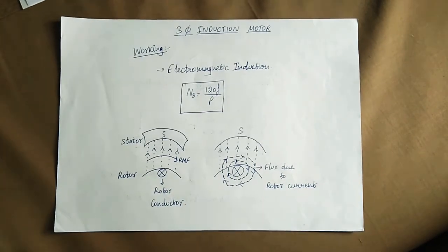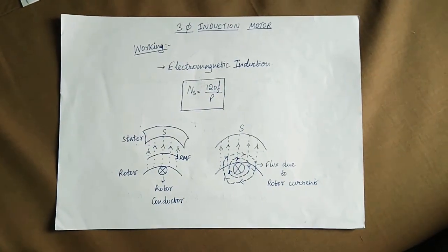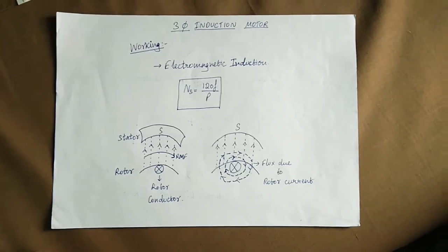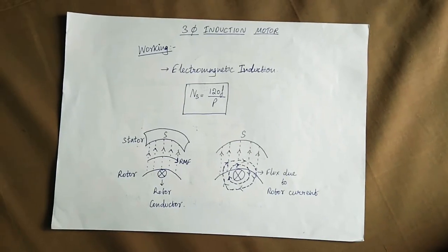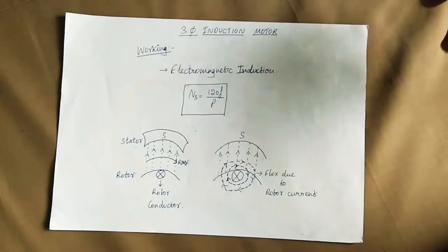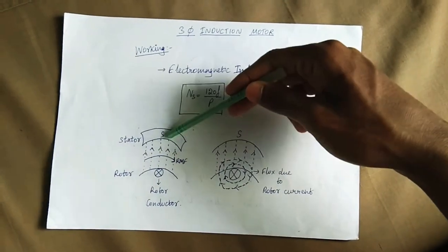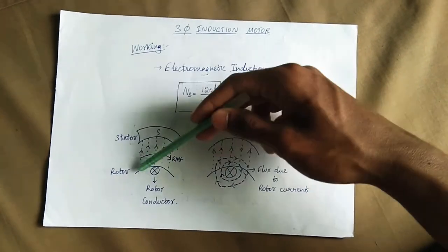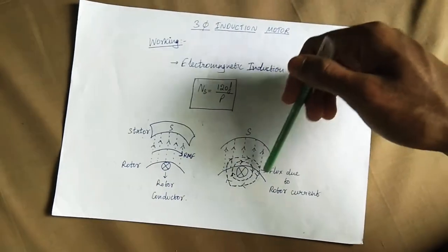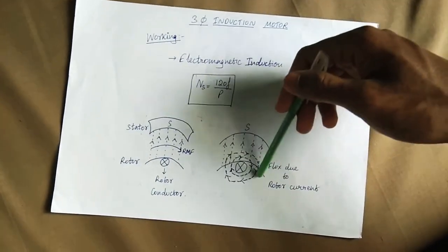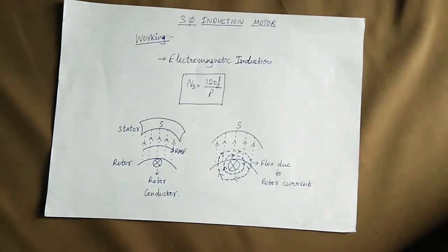The flux is linked to the rotor, and that induces an EMF. The torque and induced current — this is called electromagnetic induction. The synchronous speed is 120F/P. The rotating magnetic field (RMF) and its direction of rotation are responsible for rotor operation.